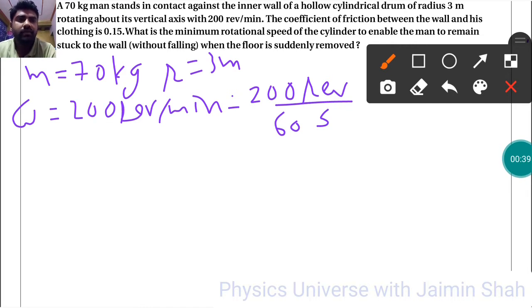The coefficient of friction between the wall and his clothing is, so mu we have, is equal to 0.15.